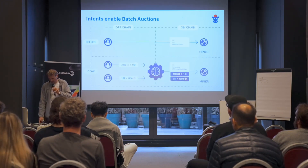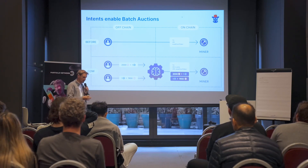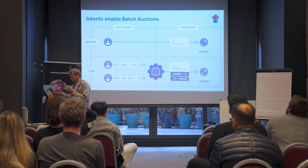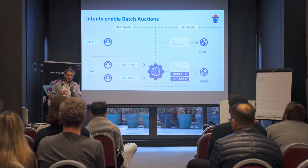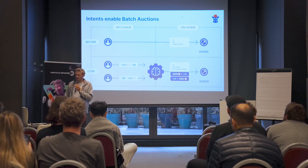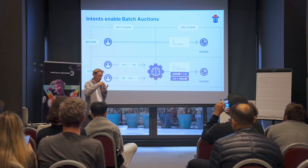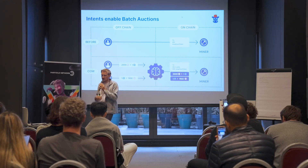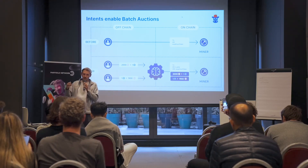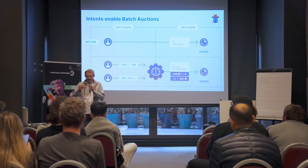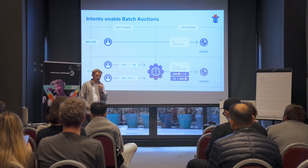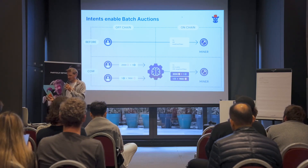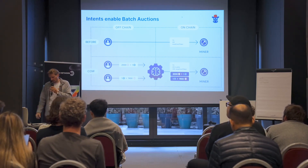We can actually overcome this drawback in the way that CoW Protocol has implemented intents — not just executing intents individually and sequentially, but enabling what we call batch auctions: collecting multiple trade intents in the same block, putting them all together into a single batch, having a decentralized solver network compete for the right to execute the batch, and then settling not just a single intent but multiple trade intents in the same Ethereum transaction.